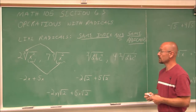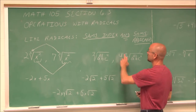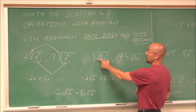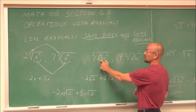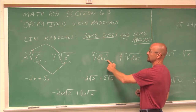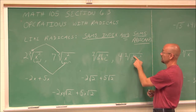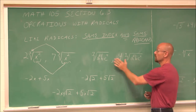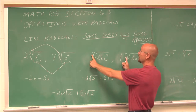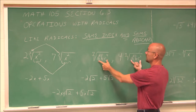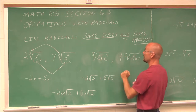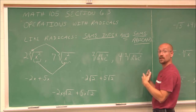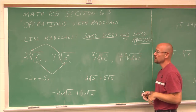Here we have another example. We have indexes of 7, so that's the same. And our radicand for this one is a squared b, c to the fourth — and this one is also a squared b, c to the fourth. So they would be the same; they are like radicals. Same index, same radicand. Here I have one of them, here I have four of them. That coefficient is just the number out front.